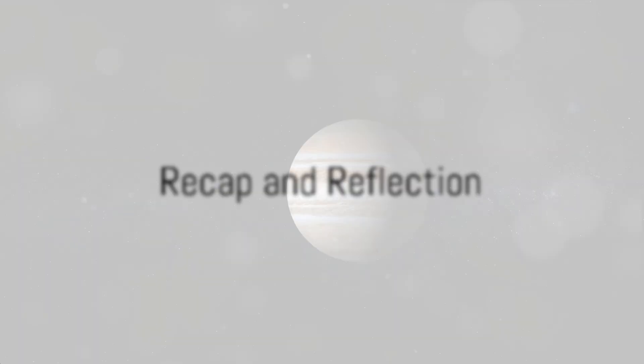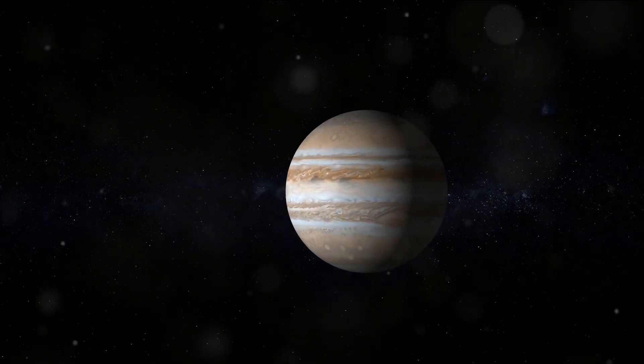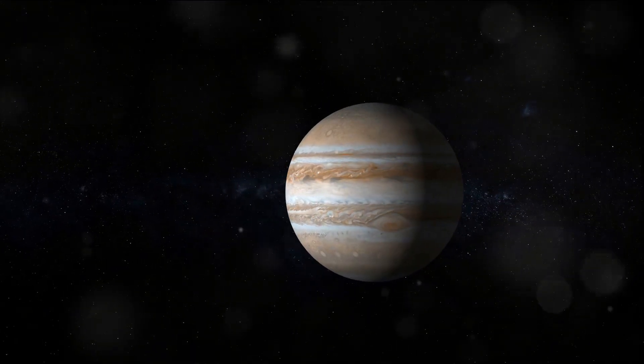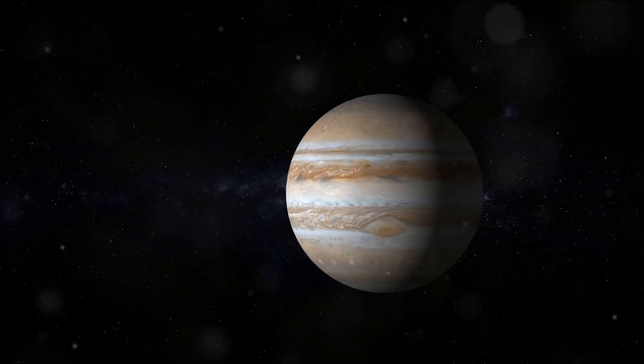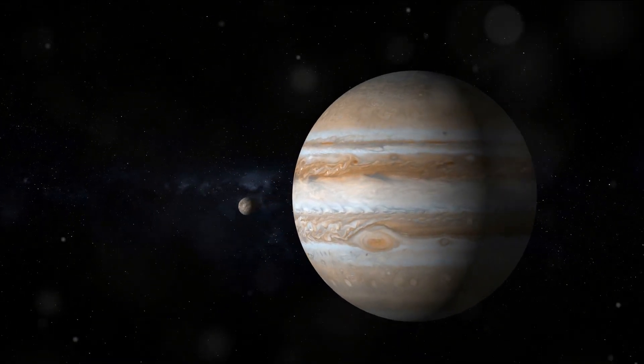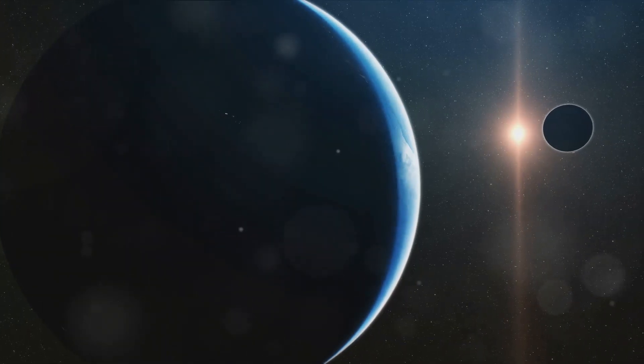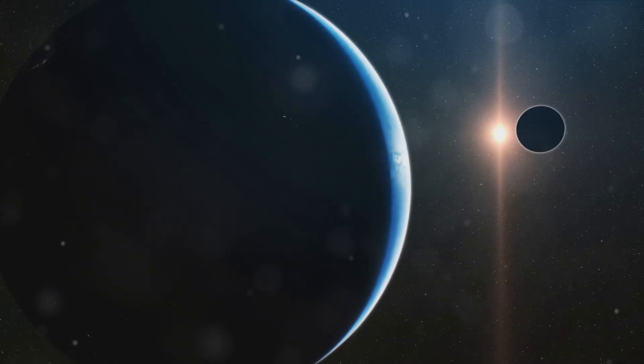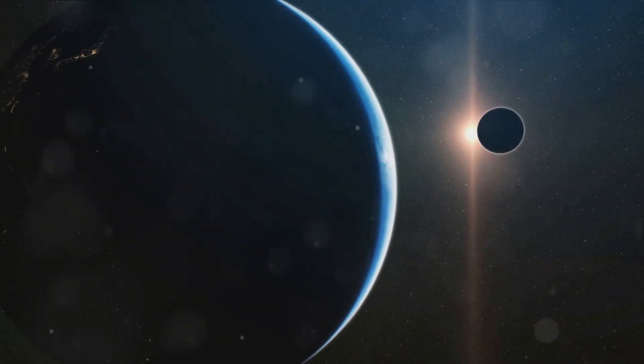To recap, we've journeyed from the sun through the inner rocky planets of Mercury, Venus, Earth and Mars, past the asteroid belt to the gas giants of Jupiter and Saturn, and the ice giants of Uranus and Neptune, and finally to the icy objects of the Kuiper belt. We've seen how the sun, moon and Earth interact to give us time, seasons, eclipses and tides.